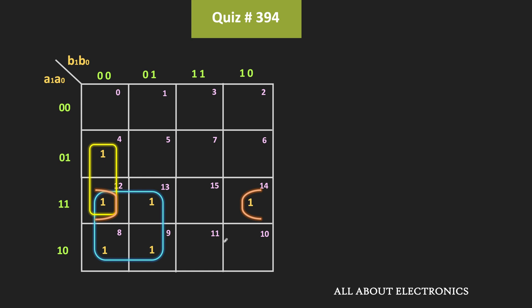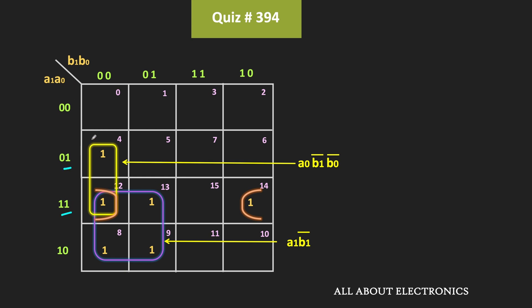This group of 4 is equivalent to a1 · b1̄, because in this group the variable a1 is equal to 1 while the variable b1 is equal to 0. The second group corresponds to a0 · b1̄ · b0̄. And the third group corresponds to a1 · a0 · b0̄, because in this group the value of b0 is equal to 0 while the value of a1 and a0 is equal to 11.